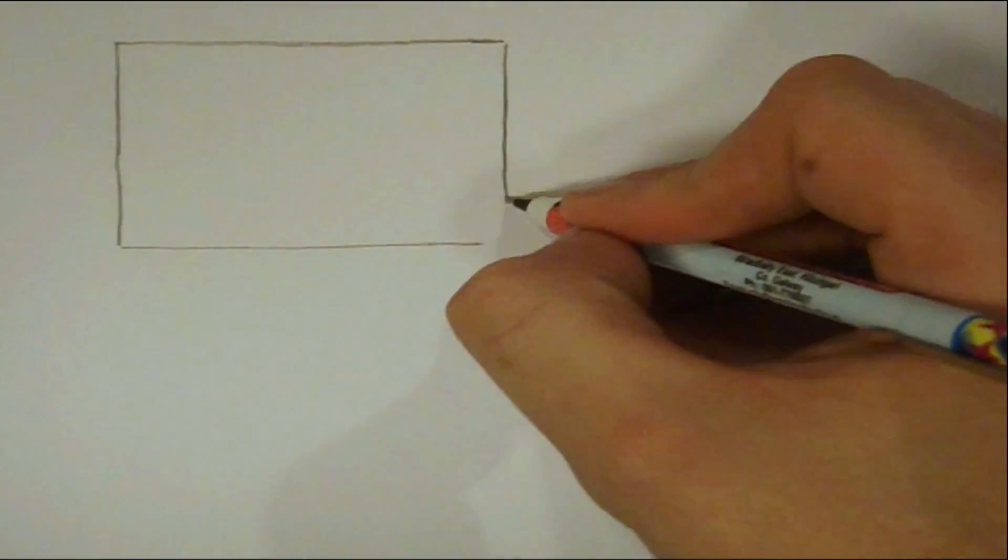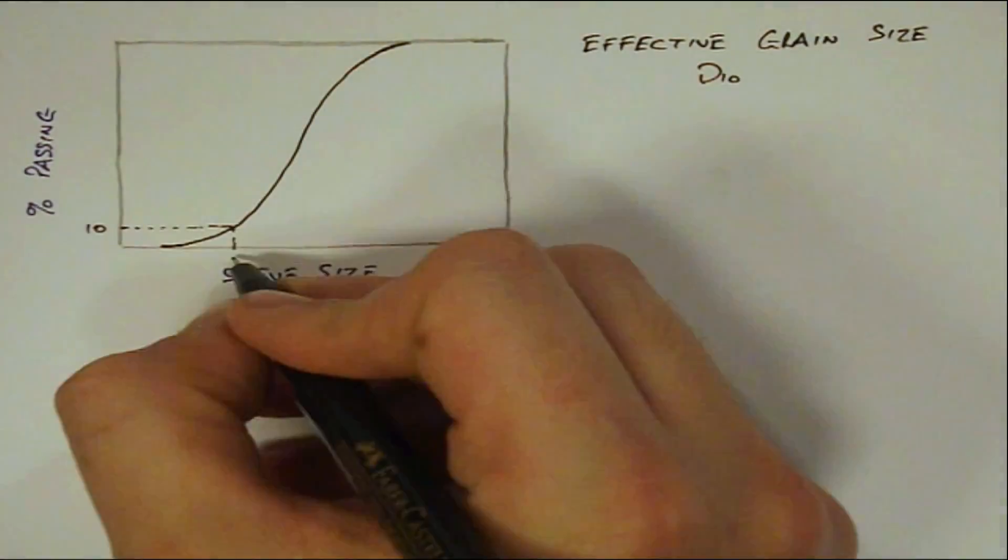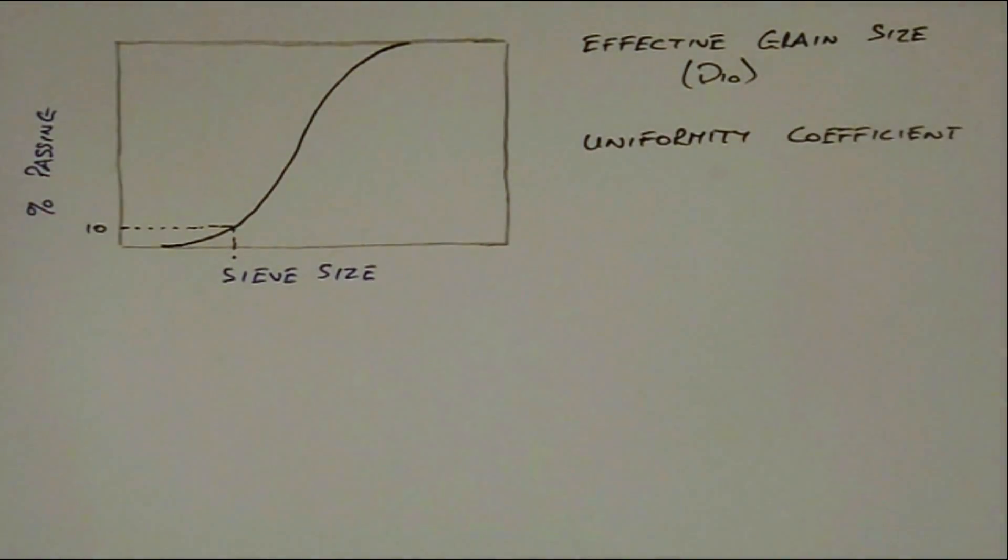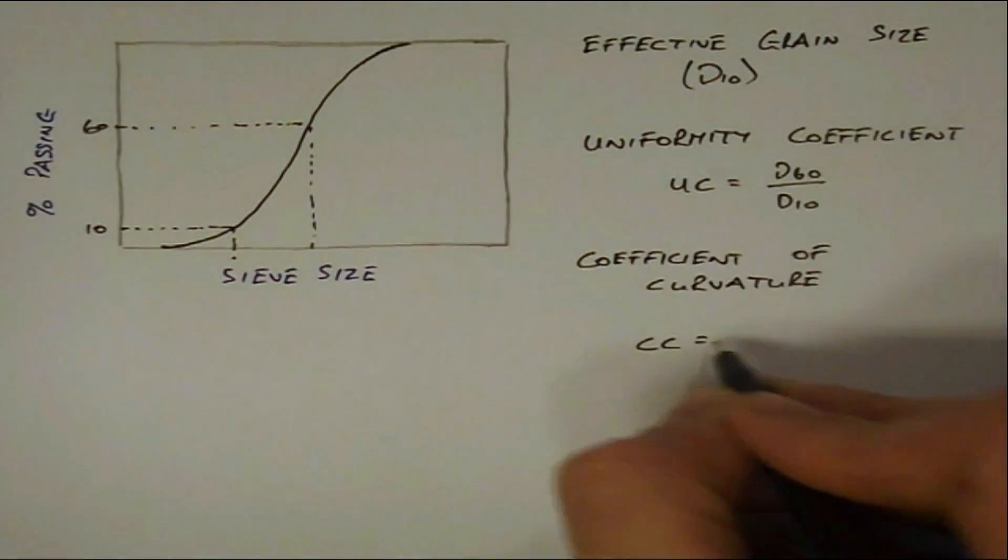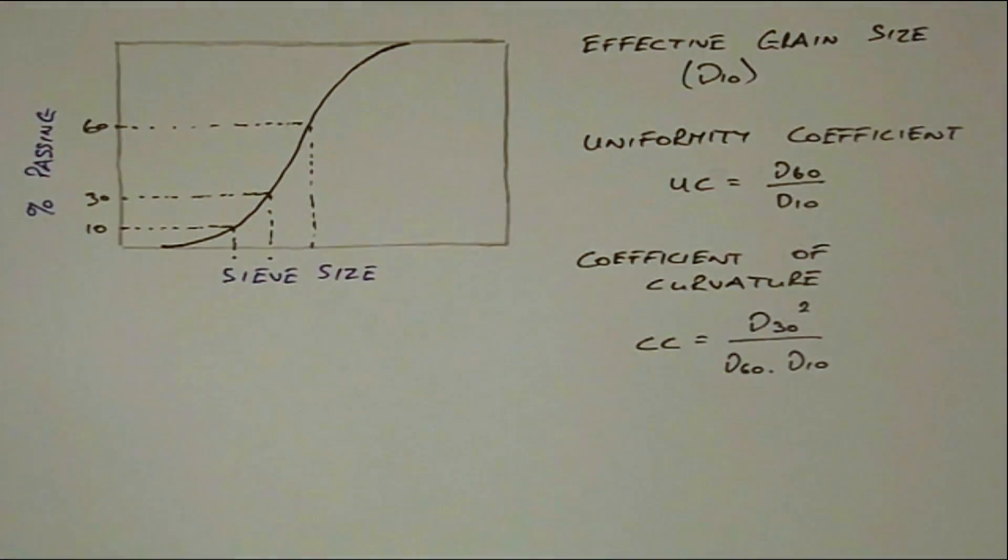The particle distribution curve is also used to determine the effective grain size D10, the uniformity coefficient and the coefficient of curvature as shown. These are useful parameters in assistant decision making.